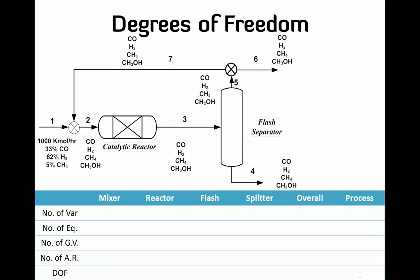Let's do the degrees of freedom analysis. Starting with the mixer: it has three streams each with four components, giving 11 variables total. We have four equations (four components), three given variables, and no additional relations, so the degrees of freedom is zero. We can solve the mixer.